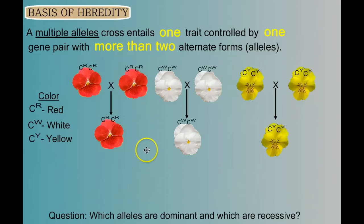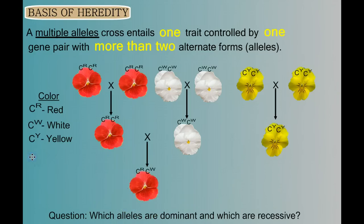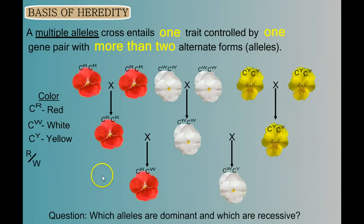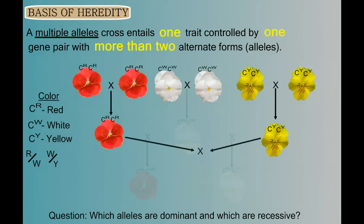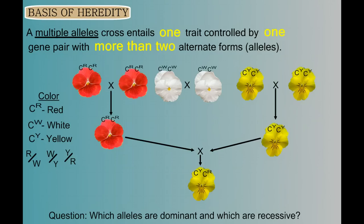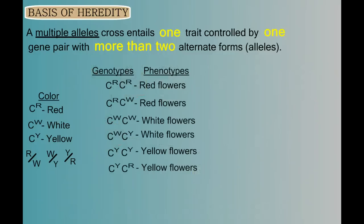I made up this example, so bear with me. If we cross a pure red flower with a pure white flower and all offspring are red, we determine that red is dominant to white. If we cross a homozygous white flower with a homozygous yellow flower and get white, then white is dominant over yellow. And if crossing homozygous red with homozygous yellow gives us all yellow flowers, we conclude that yellow is dominant to red. Now we'd have all the information needed to build our key showing three alleles, their dominance relationships, and the resulting genotypes and phenotypes.